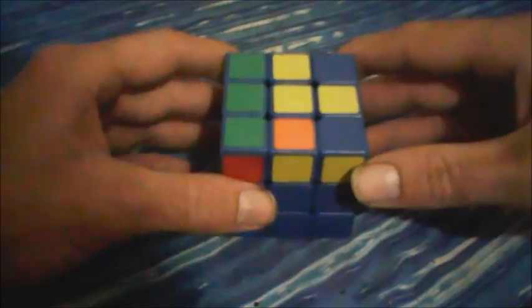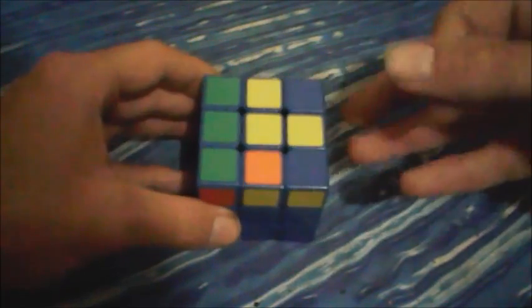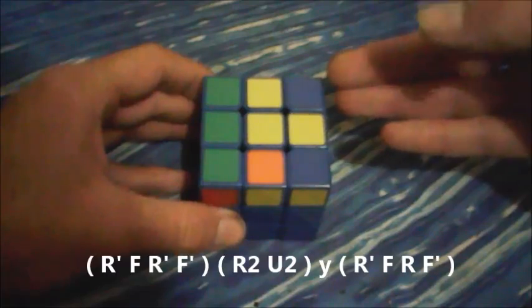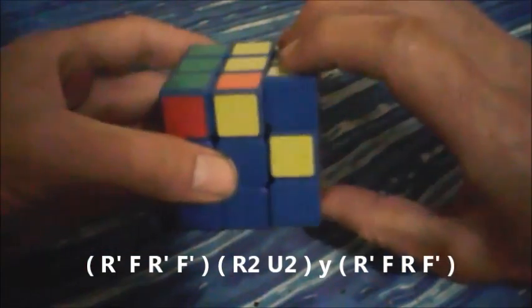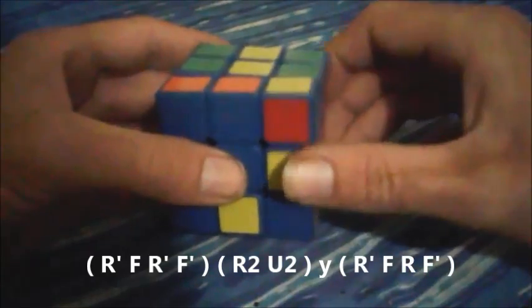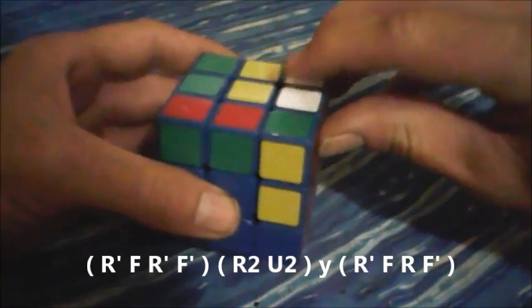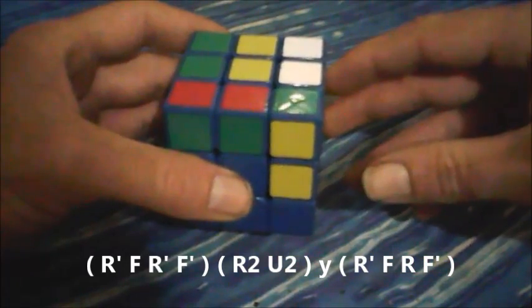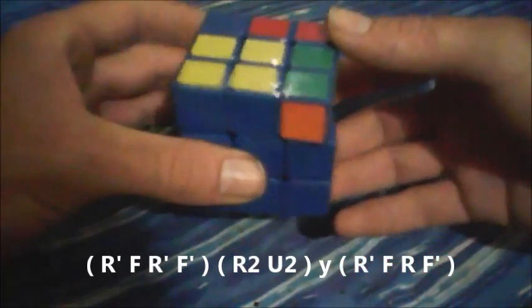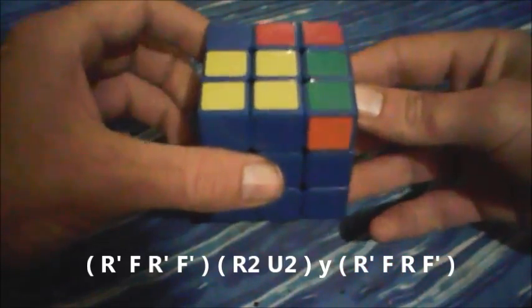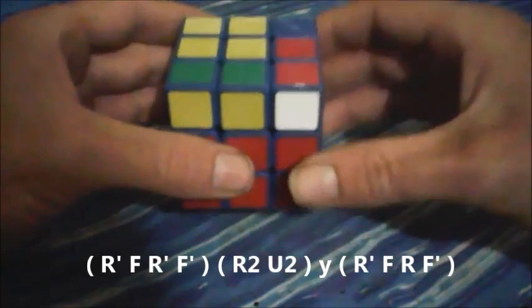Now this algorithm is easy to remember if you remember it in three sections. The first section: R' F R' F'. Then the next section: R2 U2, then we go Y, then the sledgehammer.